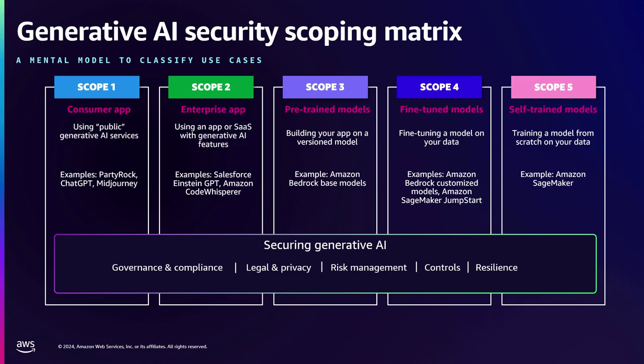Essentially, what we've done is looked at how do we talk to customers about generative AI, how do we help customers with their use cases, defining what they are, and focusing those conversations when it comes to privacy, compliance, and data considerations. Starting from the left-hand side, we've got what we call Scope 1 applications — these are your consumer apps, things that are free and publicly available, typically your ChatGPT-style applications. Anybody can use them, and this is ultimately what really got everybody excited about generative AI just over a year ago.